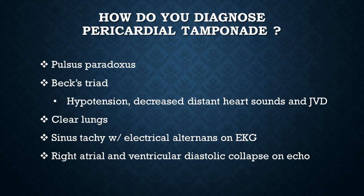And of course Beck's triad — as you can see on this slide, Beck's triad consists of hypotension, decreased and distant heart sounds, and JVD. Notice here that the lungs will be clear — super important. In pericardial tamponade, tamponade has nothing to do with your lungs. On EKG, you will see sinus tachycardia with electrical alternans, which is a phenomenon used to describe different heights of the QRS complexes. You will also see right atrial and ventricular diastolic collapse on echocardiography.